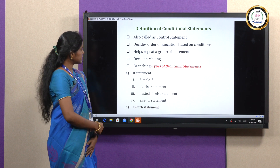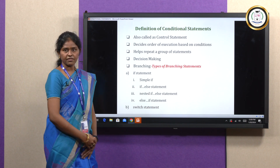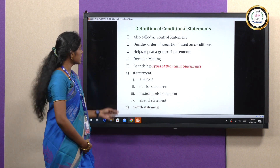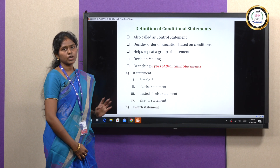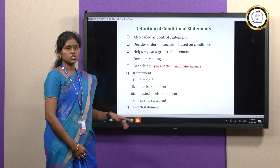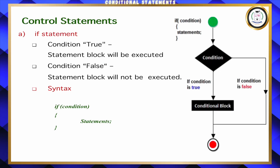The types of branching statements are: simple if statement, if-else statement, nested if and the else-if statement. Finally, we are going to finish with the switch statement.